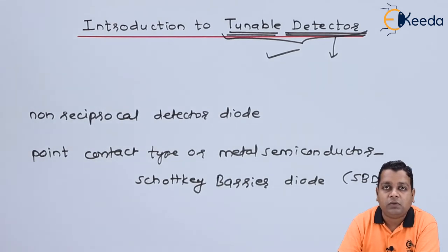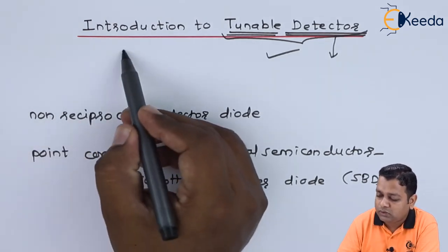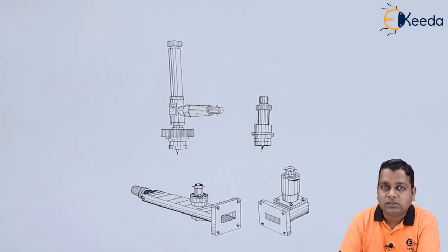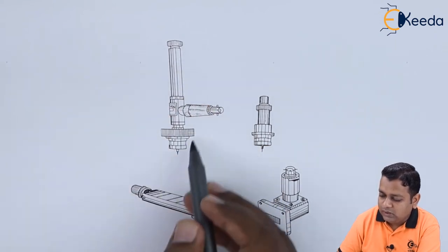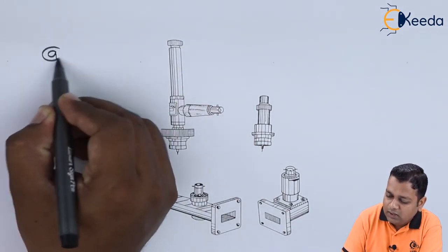So with the help of one schematic diagram we can get it introduced properly. This is the schematic diagram. In the schematic diagram you can see there are four components. We can name these four components one by one.